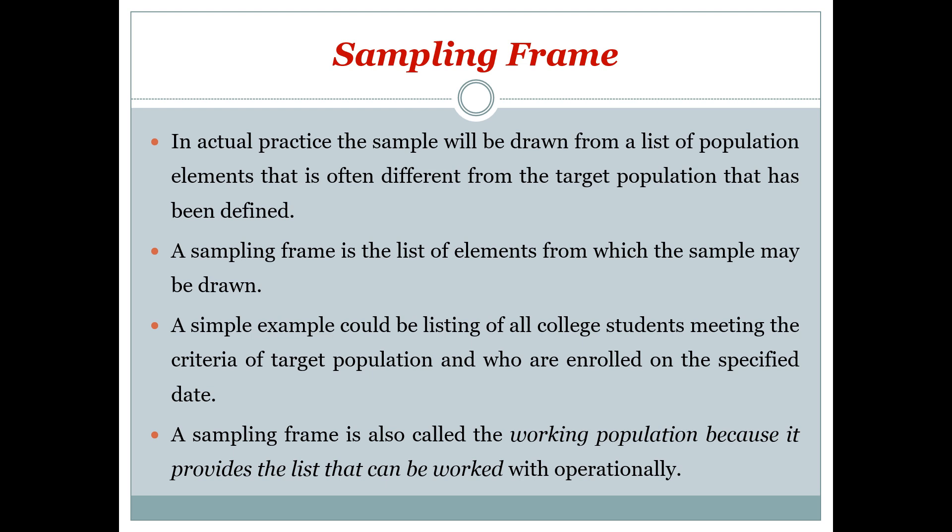A sampling frame is the list of elements from which the sample may be drawn — the actual list from which the sample will be drawn, which is often different from the defined target population. For example, a listing of all college students meeting the criteria of the target population who are enrolled on a specific date. A sampling frame is also called the working population because it provides a list that can be worked with operationally.